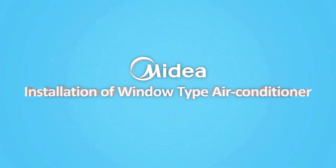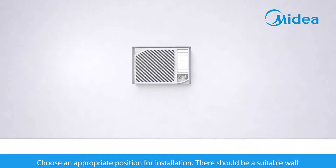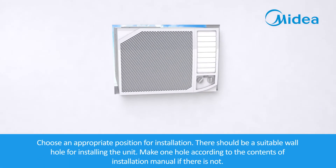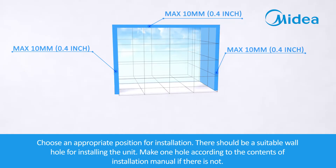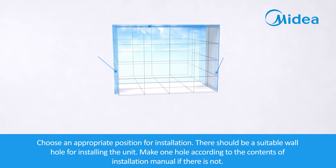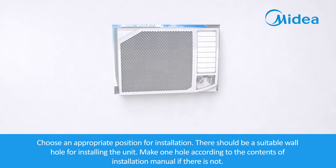Installation of window type air conditioner. Choose an appropriate position for installation. There should be a suitable wall hole for installing the unit. Make one hole according to the contents of the installation manual if there is not.